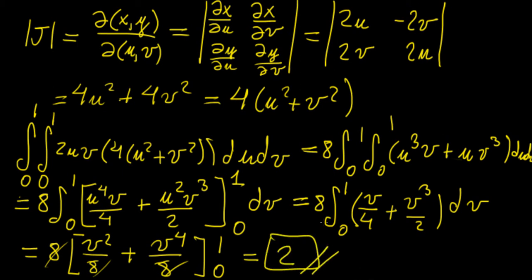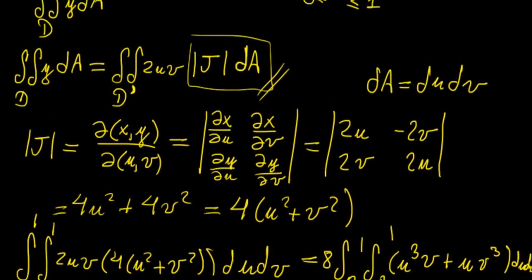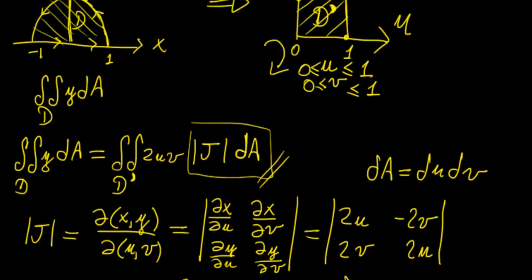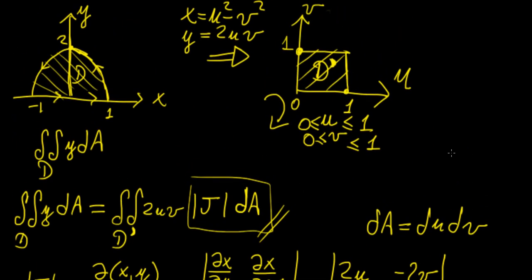The value of the integral is 1. This is the same value we would have gotten by performing the integration in the original region, but the key difference is that we simplified the region of integration by performing this transformation. Note that this transformation was given in the problem, so we didn't need to derive it intuitively.